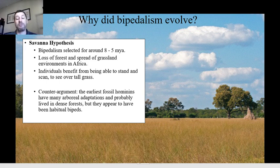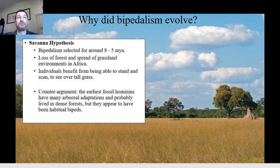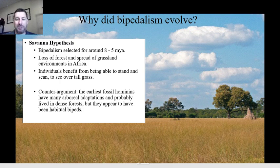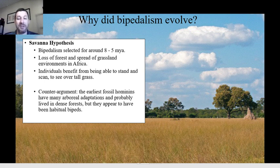Those are the major traits of bipedalism — you should familiarize yourself with them, as those will probably all be exam questions in some form. We'll probably have examples where we look at an individual bone — a skull with the foramen magnum, a femur with the angle of the femur, or a foot with the angle of the hallux — and the question will be: was this individual bipedal? Were they probably an obligate biped or a habitual biped?